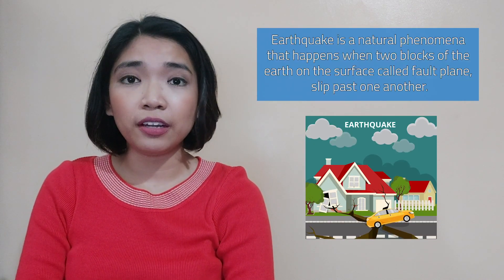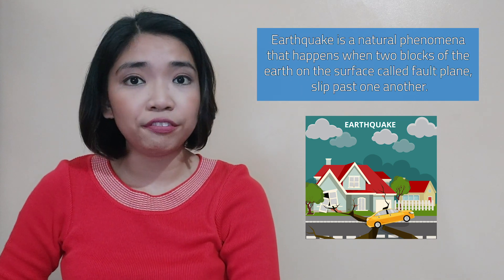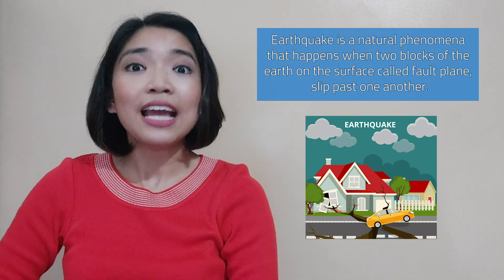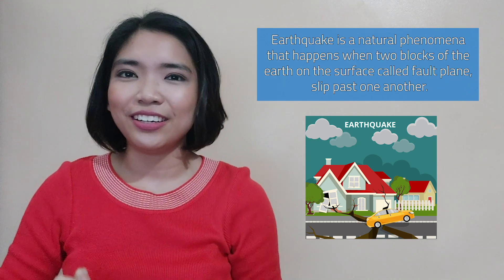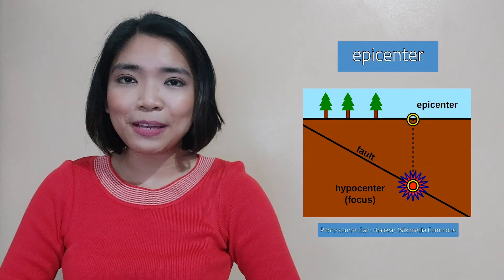An earthquake is a natural phenomenon that happens when two blocks of the Earth on the surface, called the fault plane, slip past each other. The earthquake starts below the Earth's surface, and this location is called the hypocenter. The location directly above the hypocenter, which is on the actual surface of the Earth, is called the epicenter.